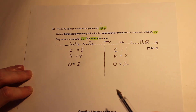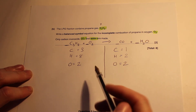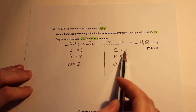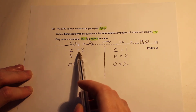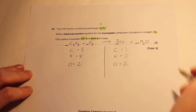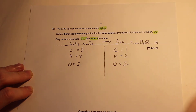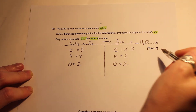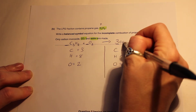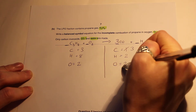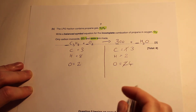We have one carbon on the right and three on the left. The easiest thing is to put the number 3 in front of our carbon monoxide. Recounting: we now have three carbons, and then three oxygens from CO plus one from H2O gives us four oxygens on the right.